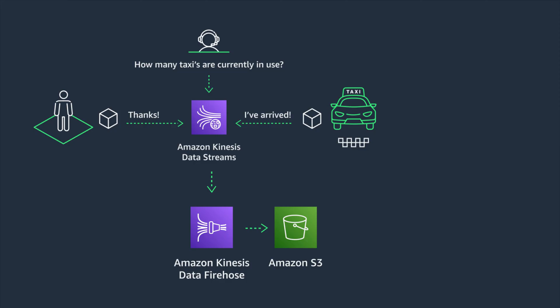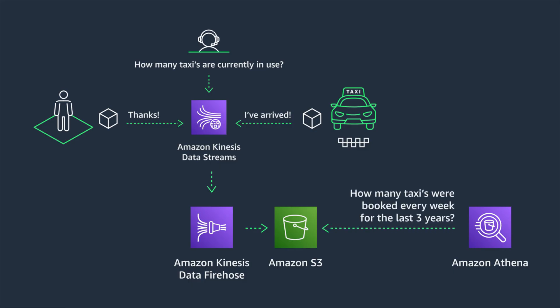But I recommend that instead we use Kinesis Data Firehose, which will allow us to stream events to Amazon S3 without having to write or manage any code at all. Kinesis Data Firehose natively integrates with Kinesis Data Streams and Amazon S3 to seamlessly deliver these events to the bucket. Once those events are in the bucket, they can be sent to Amazon Glacier for long-term archive, or we can use Amazon Athena to query the information in this bucket. For example, we can run a query to get stats about how many taxis were booked each week for the past three years, and later use machine learning to predict demand for our taxis.